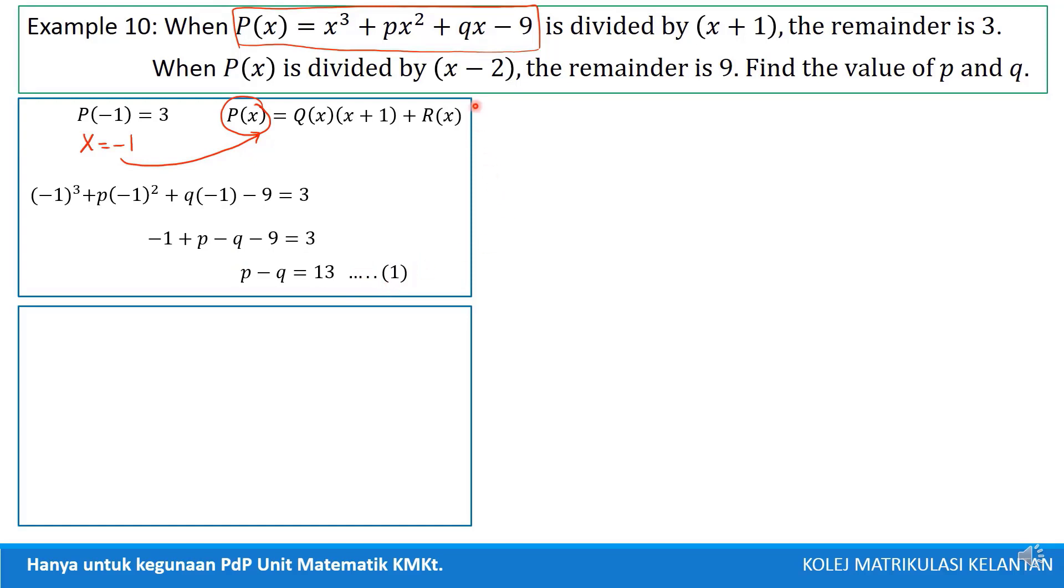For the second equation is divided by x minus 2, remainder is 9. Same as we get the first equation. So, the second information, we can get second equation. Let's say we have this equation polynomial. From remainder theorem, P(2) equal to 9.